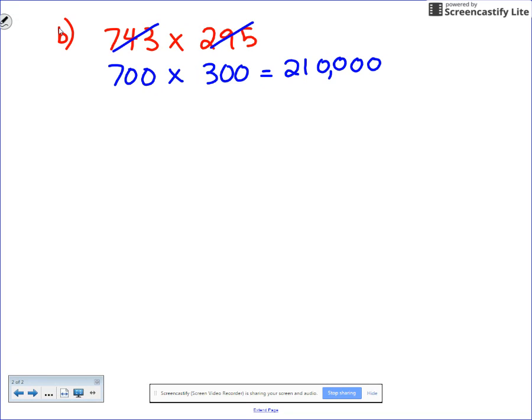So let's do 743 times 295. We're going to start with the five in the ones place. Five times three is 15, carry the one. Five times four is 20 plus one is 21. Five times seven is 35 plus two is 37.